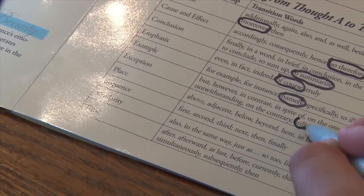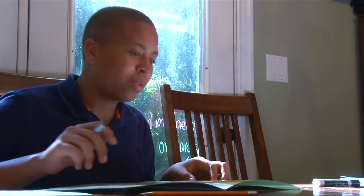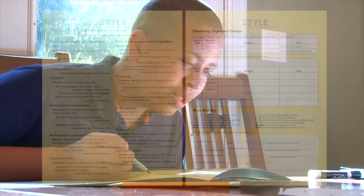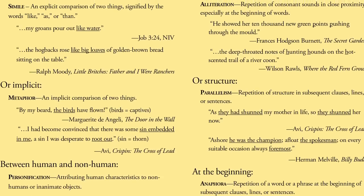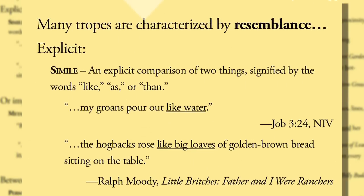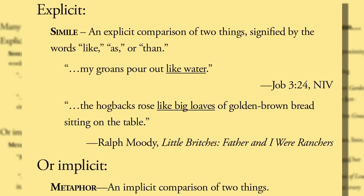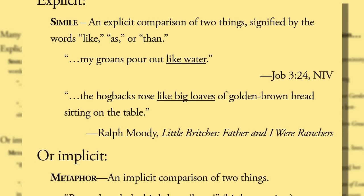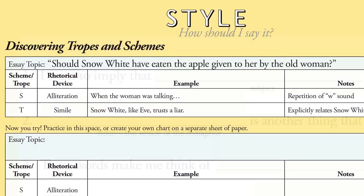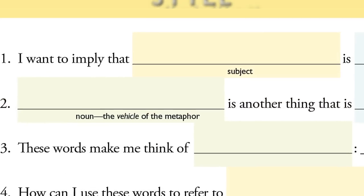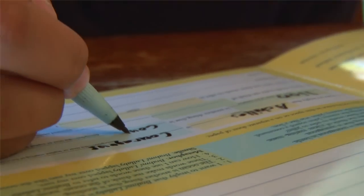This will prepare the student to move into the next stage: style. Two pages are dedicated to the canon of style, or choosing the most beautiful words and phrases. The solid yellow style page features a resource list of techniques to add elegance to their writing. These are called schemes and tropes and will give your student the confidence to write well. On the second style page with boxes, you can jot down ideas from the list you would like to use or practice writing examples.